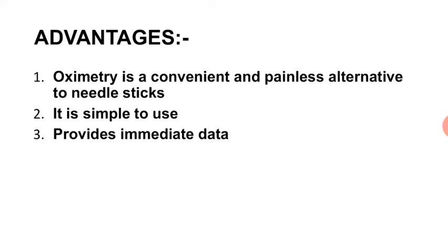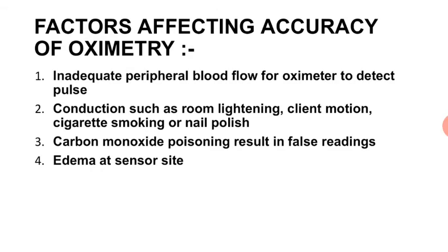Advantages: oximetry is a convenient and painless alternative to needle sticks; it is simple to use and provides immediate data. Factors affecting accuracy of oximetry: first, inadequate peripheral blood flow for the oximeter to detect pulse; second, conditions such as room lighting, client motion, cigarette smoking, and nail polish; third, carbon monoxide poisoning resulting in false readings; fourth, edema at the sensor site।